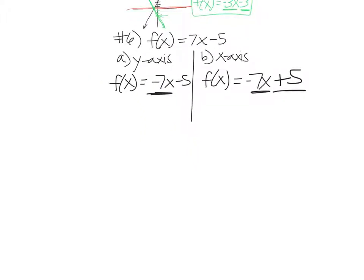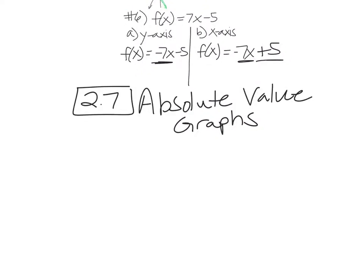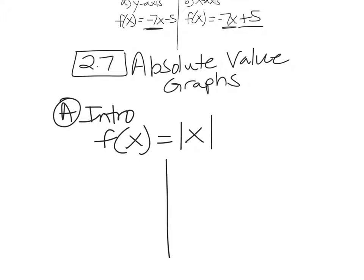Let's do 2.7 now. 2.7 is going to take all the stuff we just did and apply it to a new parent function called the absolute value. So our two parent functions so far: we had a line and we have a U shape. Now absolute value. We'll do a little intro and do an absolute value graph.